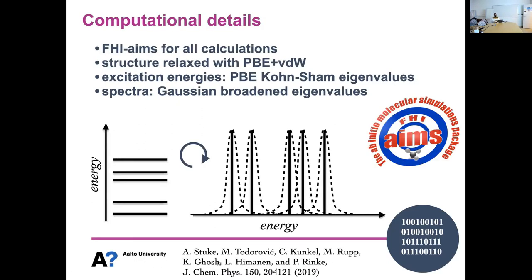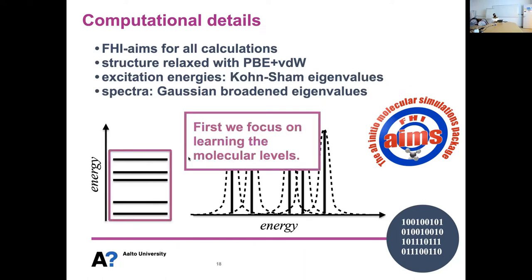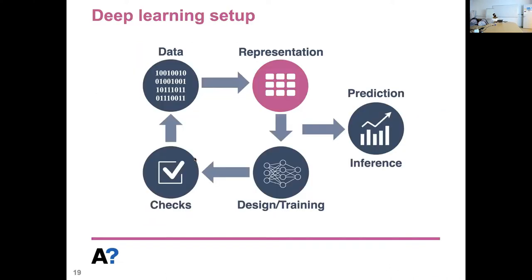For our experiments, we wanted to predict the spectra, but as an intermediate step we decided to first check if we could predict the energy levels of the molecules. All of these energy levels were computed with FHI-aims with the following structure relaxations, and then to get the spectra we Gaussian-broadened these delta functions and added them up to get the spectrum.